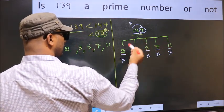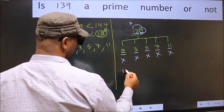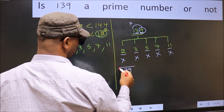So 139 is not divisible by any of these numbers. Hence 139 is a prime number.